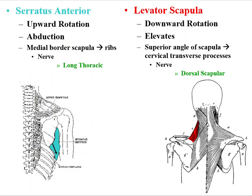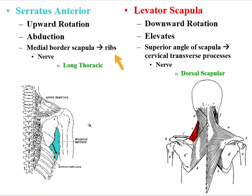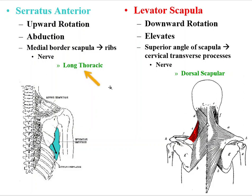Serratus anterior. This is a posterior view. Here's your scapula, and the serratus anterior comes from the medial border of the scapula on the anterior side and wraps around the side of your mid-portion to attach to the ribs. Its functions are upward rotation — because when it pulls the lower part anteriorly, the glenoid fossa will go up — and it also functions as an abductor or protractor of the scapula. Neural innervation is the long thoracic nerve.